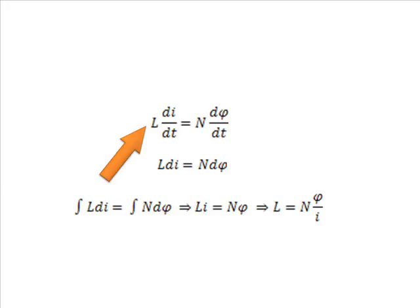Now, from equation 1 and 2, we get L dI/dt equals N dφ/dt, or L dI equals N dφ. Integrating both sides we get L I equals N φ, or L equals N φ by I, say this is equation 3.